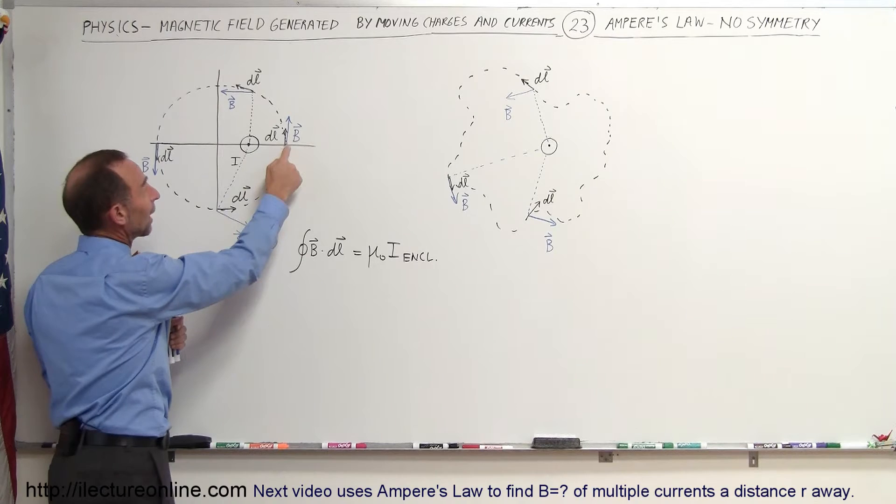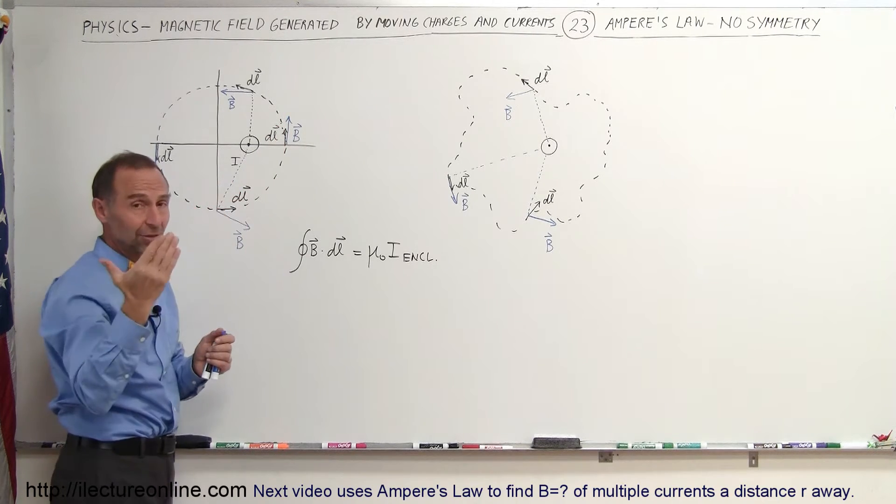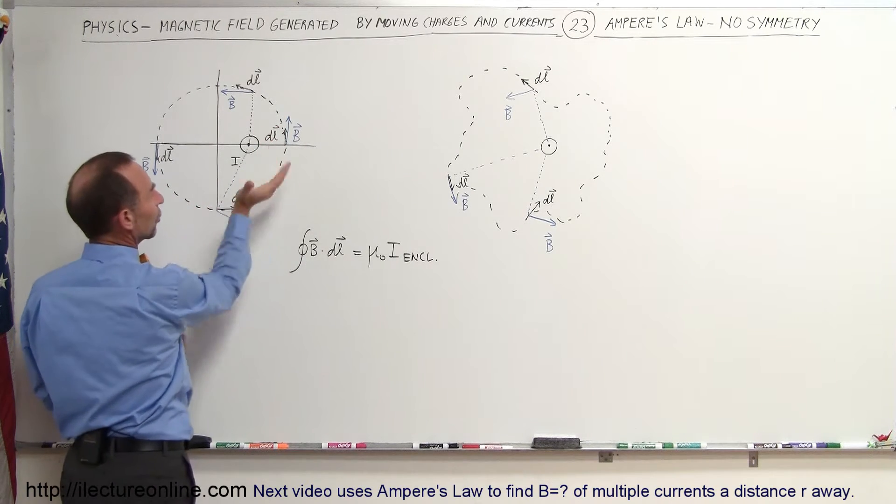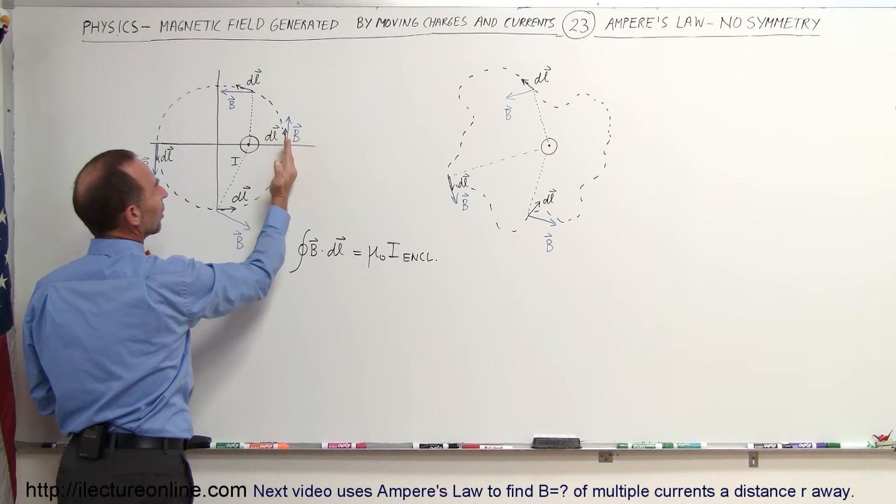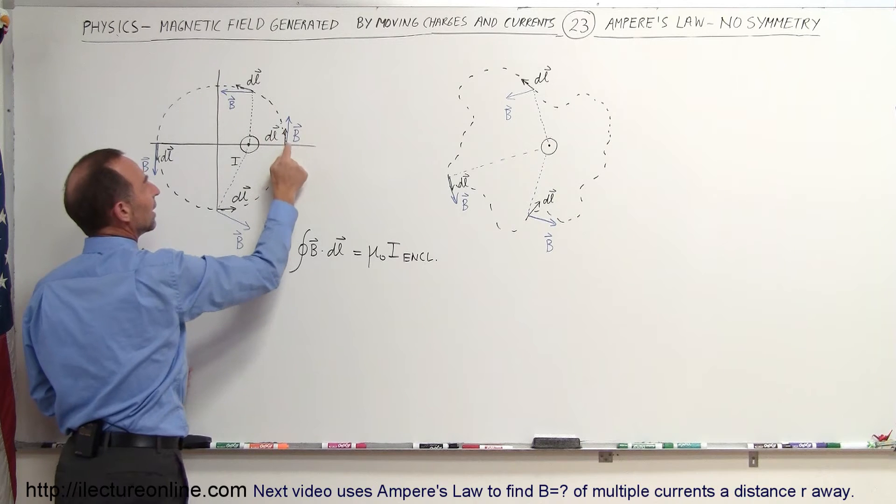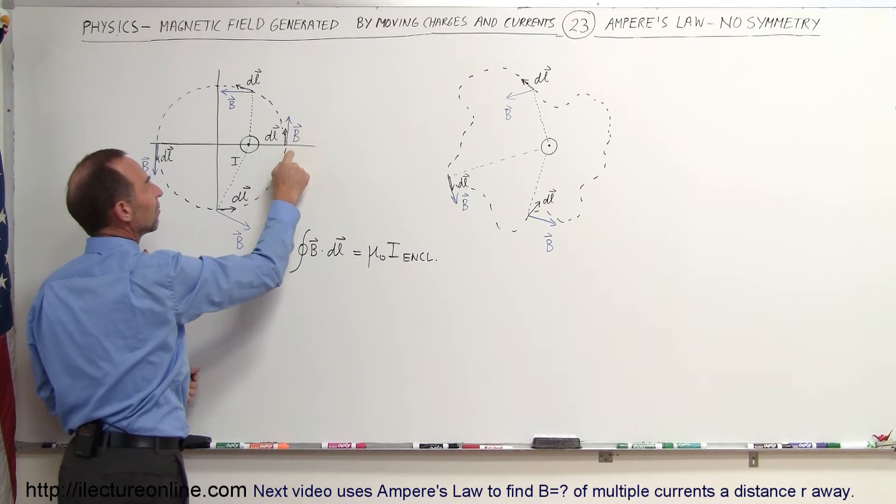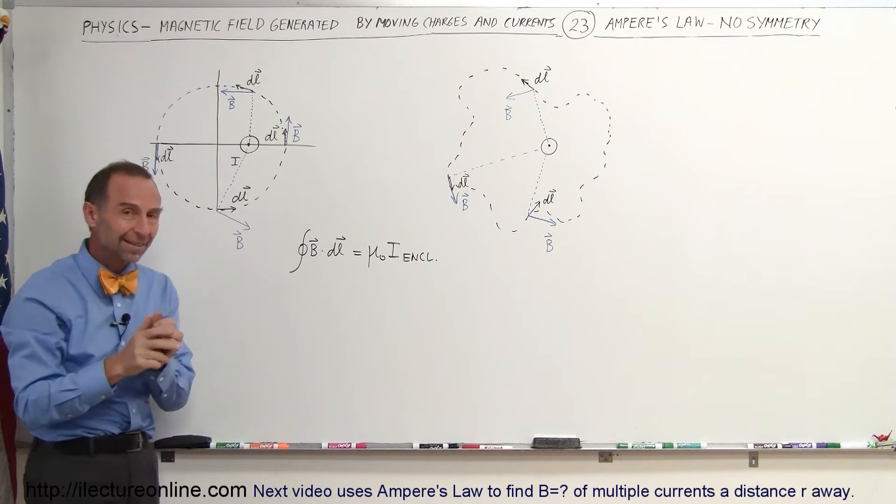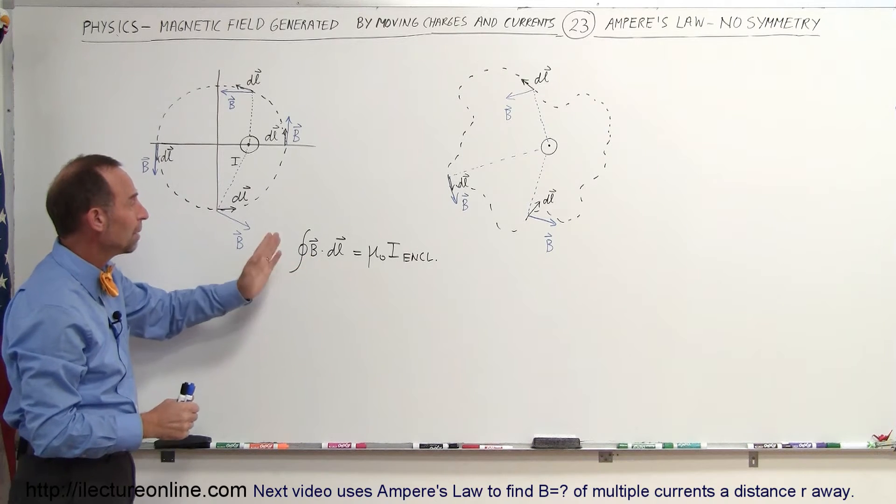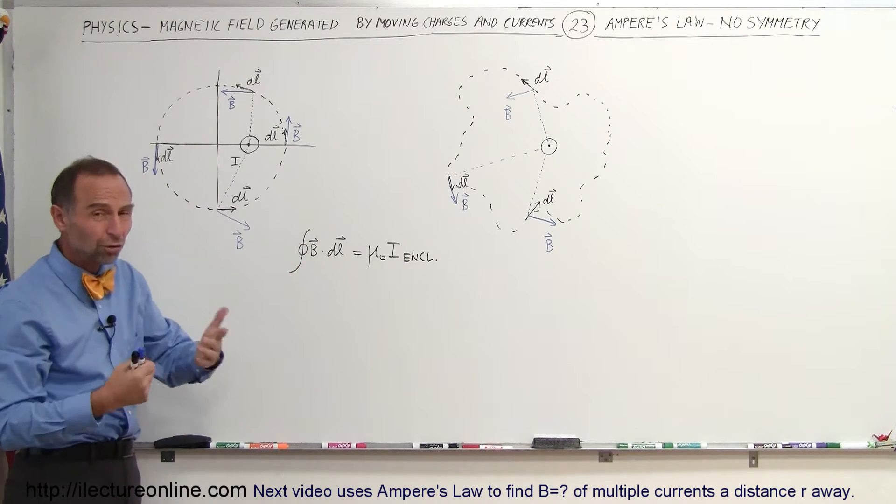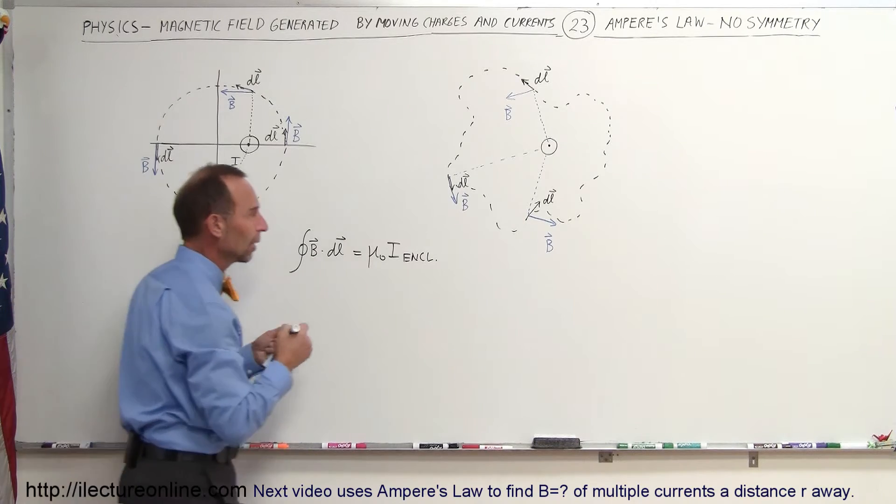Notice in this case, right at this location, you can see that the B field, because you take your thumb in the direction of the current and your fingers curl in the direction of the B field, so from there to there, the perpendicular direction is the direction of the magnetic field. You can see that both the line segment and the magnetic field are in the same direction, so B dot DL would be B times DL times the cosine of the angle between them. Let's write that down.